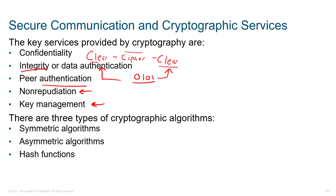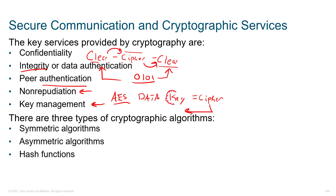Key management is a really interesting piece of this. In order to take clear text, turn it into ciphertext, and then take it back from ciphertext into clear, we have to use an algorithm — AES is very common — and then we need to use a key. AES, when applied to your data with a special key, creates ciphertext. To decrypt it, we need the same algorithm and the same key. If you don't have the same key on both sides, you're not going to be able to decrypt the data. The trick is: how do we get the key to the other side? We don't have encryption yet. We'll discuss how these keys are established and refreshed throughout the lifetime of the VPN to keep our data secure.